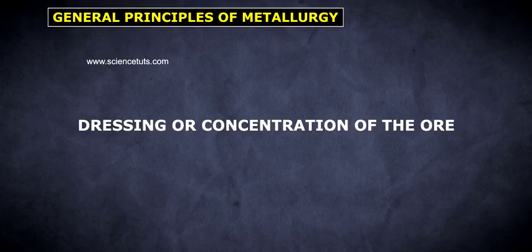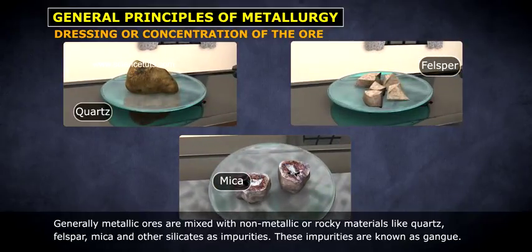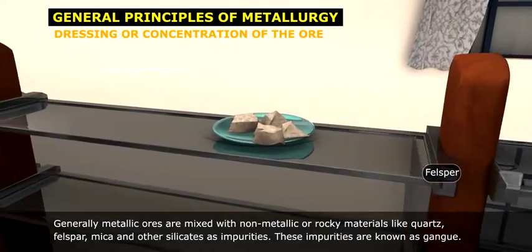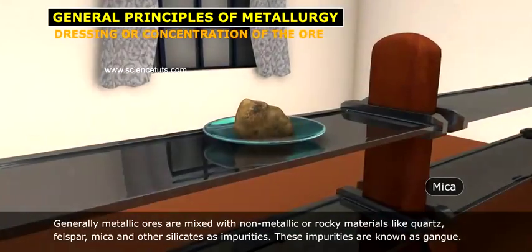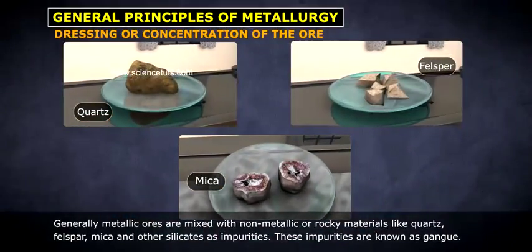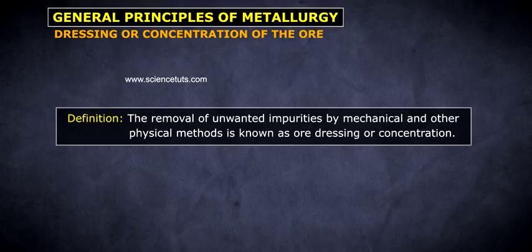Dressing or concentration of the ores. Generally, metallic ores are mixed with non-metallic or rocky materials like quartz, feldspar, mica and other silicates as impurities. These impurities are known as gangue. The removal of unwanted impurities by mechanical and other physical methods is known as ore dressing or concentration.